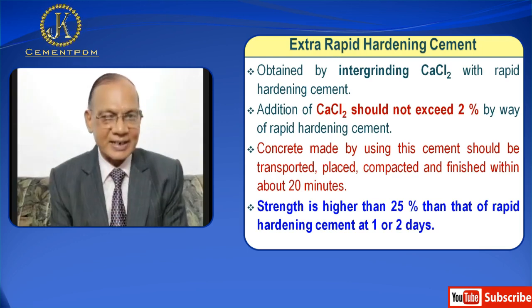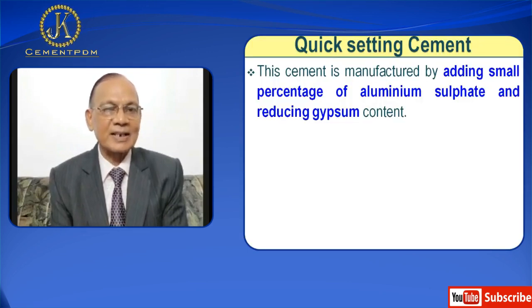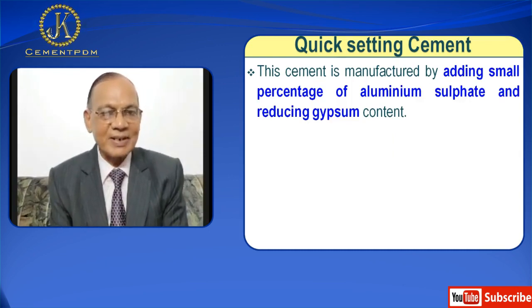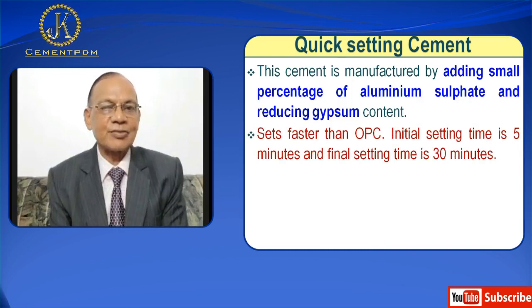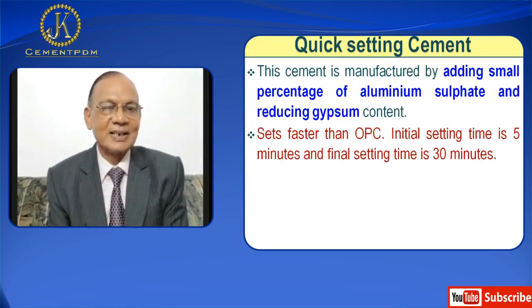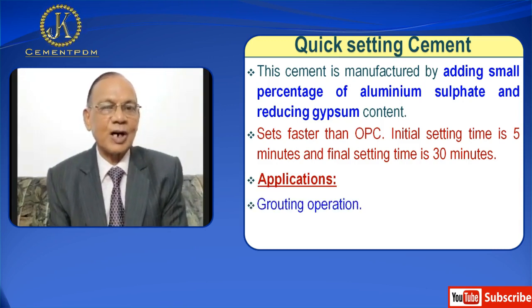Next is Quick Setting Cement. This cement is manufactured by adding a small percentage of aluminum sulfate and reducing the gypsum content. Since it sets faster than OPC, initial setting time is 5 minutes and final setting time is 30 minutes — that is why it is known as quick setting cement. Applications: used for grouting operations and for underwater concreting.